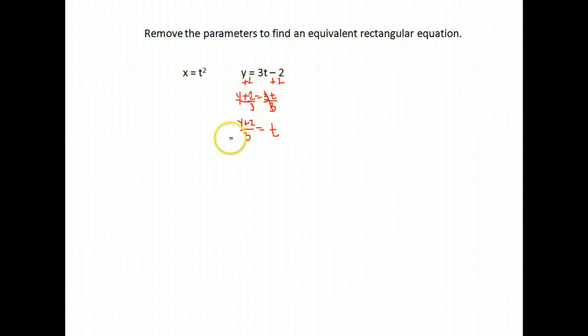Step one is to solve one of the equations for t. I selected this one so that I did not have to deal with plus or minus a square root. And now I'm going to substitute it into my other equation for t.